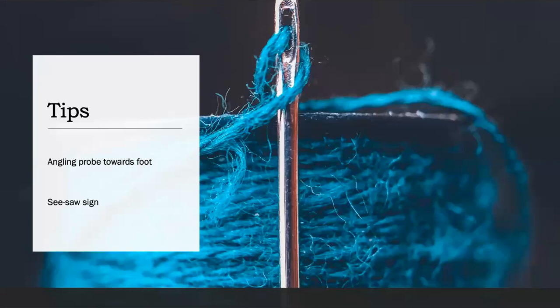Just some tips and tricks. It can sometimes be difficult to visualize the nerves. Angling the probe towards the foot sometimes helps, because the nerve doesn't run parallel to the skin, so the probe doesn't always catch it perpendicularly — by angling towards the foot you can improve scanning due to the anisotropy of the nerve. The seesaw sign is also used to better visualize the nerves. This is achieved by either active or passive dorsiflexion and plantar flexion of the foot to make the nerves dance, producing a seesaw pattern.